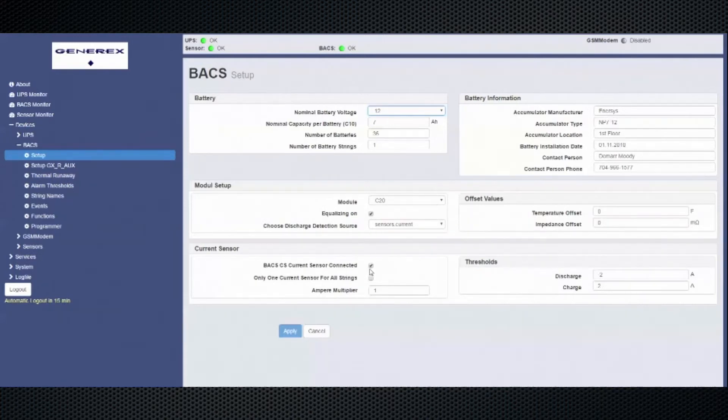You can choose your discharge detection source, current sensors, current multipliers, and any charge or discharge settings. You hit apply to save the changes.